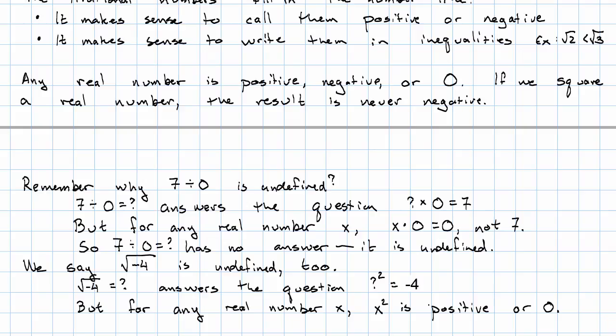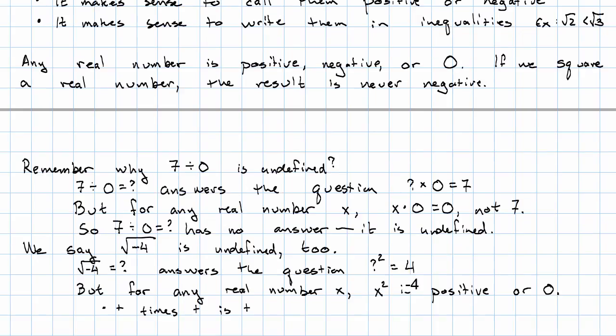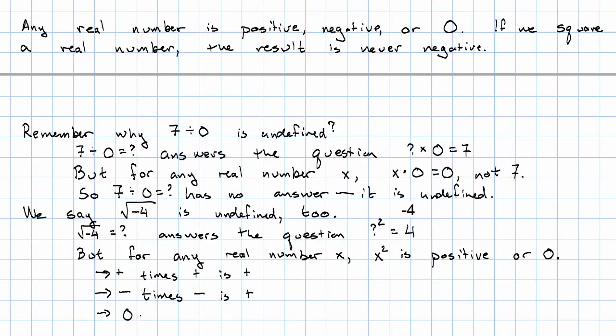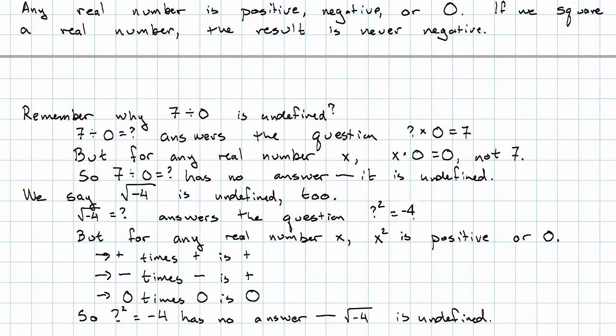Either it's a positive times a positive, and therefore a positive, or a negative times a negative, and therefore positive, or maybe it's 0. 0 times 0 is 0. Never negative. So the question, what squared equals negative 4, has no answer. The square root of negative 4 is undefined.